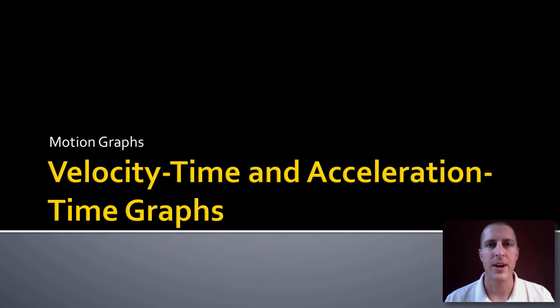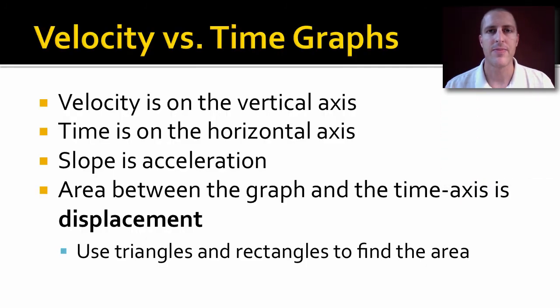Let's talk about velocity time graphs and acceleration time graphs. So velocity time graphs: velocity is on the vertical axis and time is on the horizontal axis. Now the slope of a velocity time graph is acceleration, because we're talking about changing velocity, so we know that's acceleration. We can also find the displacement from velocity time graph by finding the area between the graph and the time axis. In order to find the area, we're going to use triangles and rectangles and some combination thereof to figure it out.